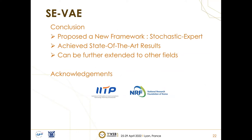Here are our conclusions. First, we proposed a new framework called stochastic expert, where each expert is selected stochastically. Second, we performed an extensive set of experiments to verify the effectiveness of our approach, achieving state-of-the-art results. Third, in this work we followed the same settings as previous approaches and applied only three experts, leaving the search for optimal parameters as future work. We also want to highlight that this approach can be universal and further extended to other fields. We thank IITP and NRF from South Korea, and the anonymous reviewers for their valuable feedback.